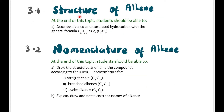So 3.1 is the structure of alkene. At the end of this lesson, you should be able to describe alkene as unsaturated hydrocarbons with general formula CnH2n. For the nomenclature of alkene, you should draw a structure and name the compound according to IUPAC nomenclature for straight chain, branched, and cyclic alkenes. And also explain, draw, and name the cis-trans isomers of alkene.